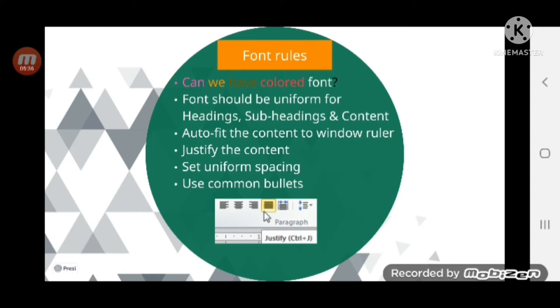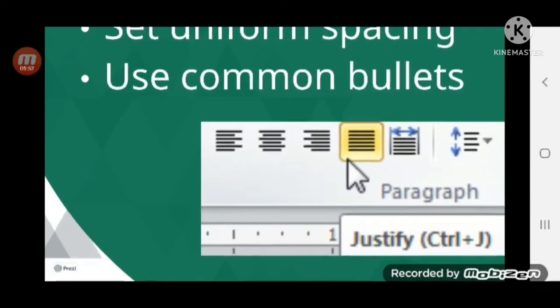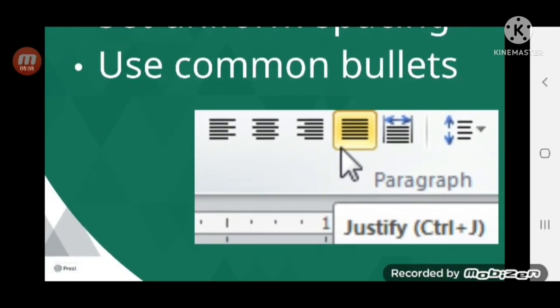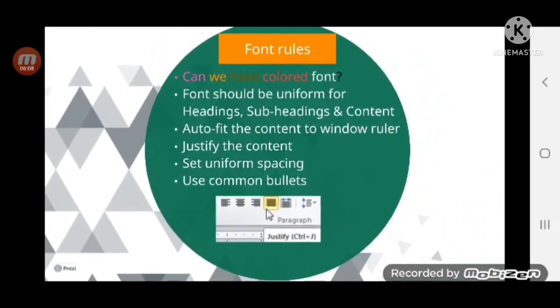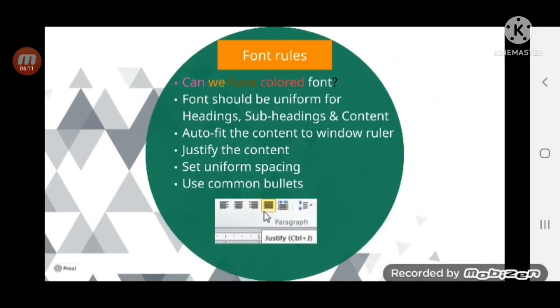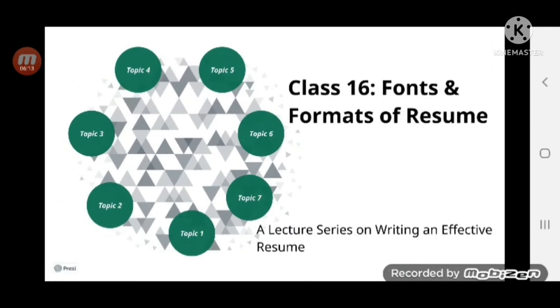Set uniform spacing — the same for line-to-line spacing, paragraph-to-paragraph spacing, and section-to-section spacing; it should always be uniform. Regarding bullets, always prefer filled bullets like a thick dot or a small filled square. Do not use hollow bullets or decorative designed bullets. Always use a filled bullet — that is the format followed on resumes and all formal documents.